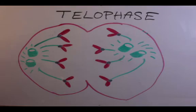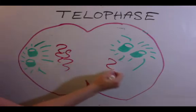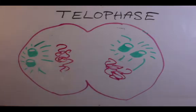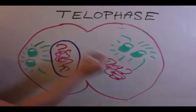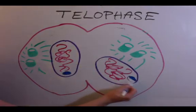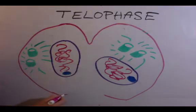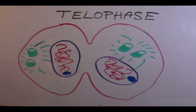At this point the chromosomes relax, and the nuclear envelope and nucleolus reform — this is telophase. The cell continues to cleave, and this is the conclusion of mitosis.